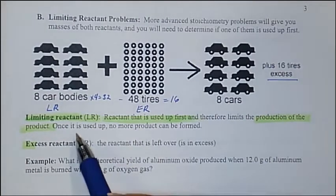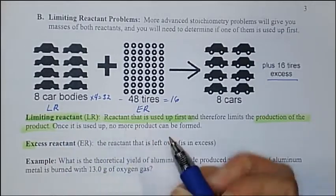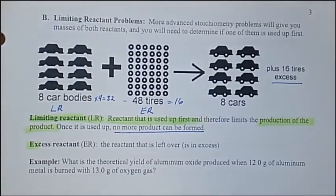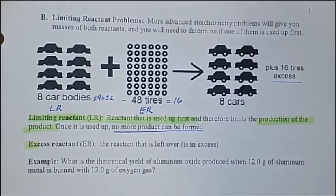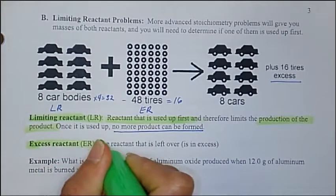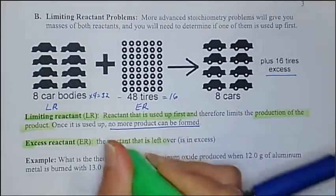And once your limiting reactant is used up, no more product can be formed. The excess reactant, which is ER, is the reactant that is left over in the reaction — and that would be our tires.